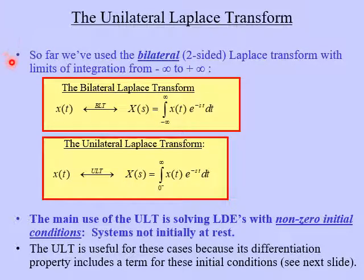So far in this chapter, we've been using what's called the bilateral or two-sided Laplace transform. The reason it's bilateral is its limits of integration go from negative infinity to positive infinity. In other words, it works on both sides of t equals zero for negative time and positive time. This is the Laplace transform that we've been dealing with in this chapter. Technically, it's called the bilateral Laplace transform, or I call it the BLT for short.